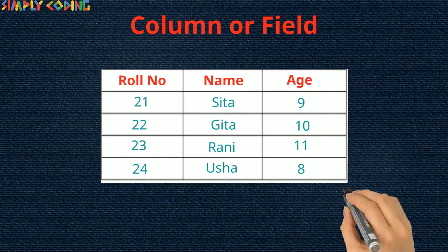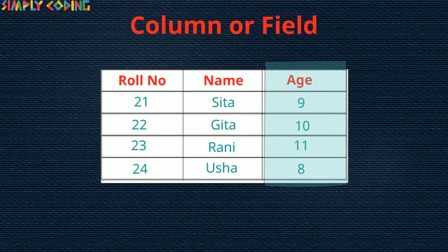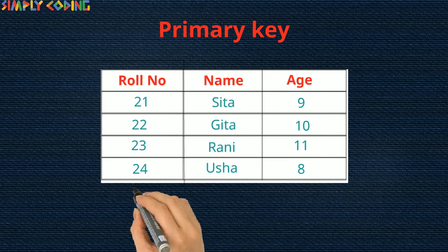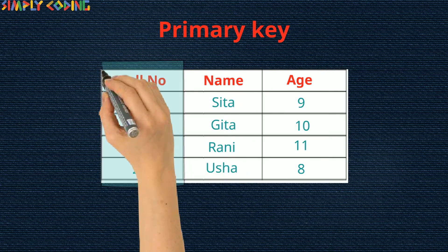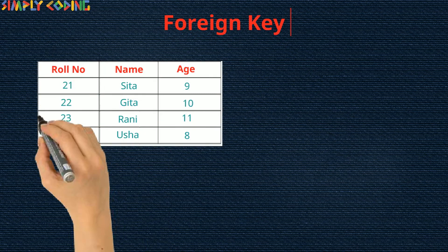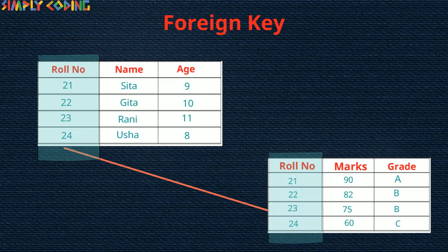A field is the smallest unit of named data and may consist of any number of bits or bytes. Normally, a table has one column or field which uniquely identifies the record of the table. This field is called the primary key. A foreign key is a field that references the primary key of another table.